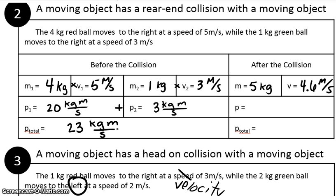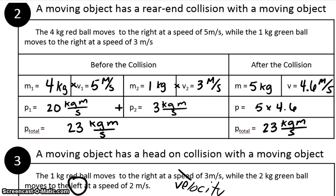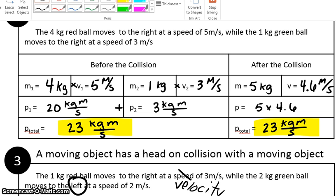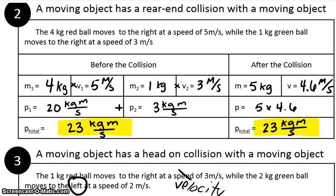After the collision, we calculate the momentum: 5 times 4.6, which gives us 23 kilogram meters per second. Amazingly, that is the same as before. The total momentum before the collision is equal to the total momentum after the collision.